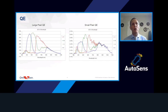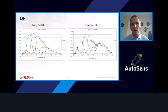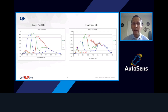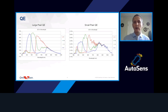Regarding quantum efficiency: the large pixel achieves a peak QE of around 65% in green. The small pixel's peak QE is approximately 0.6%, which is about 100 times less than the large pixel. This very low sensitivity is intentional, ensuring that even under bright conditions the small pixel can integrate for a long period without saturating, enabling capture of flickering LEDs and mitigation of that effect in the image.